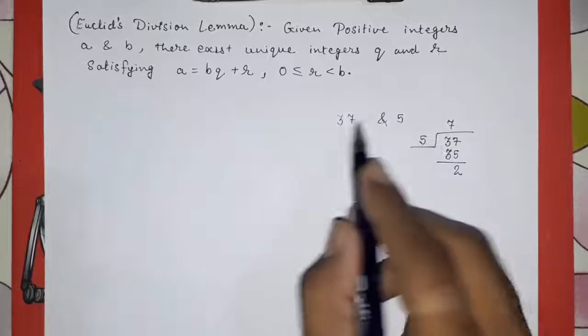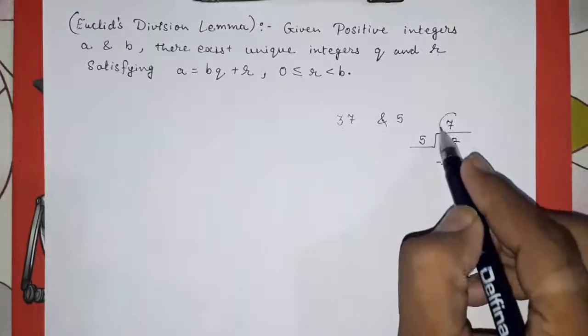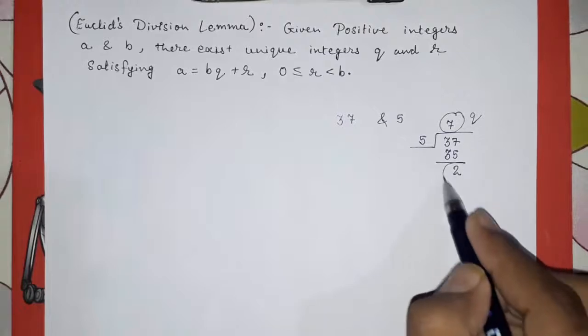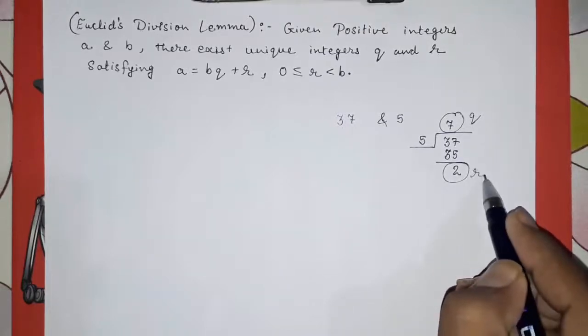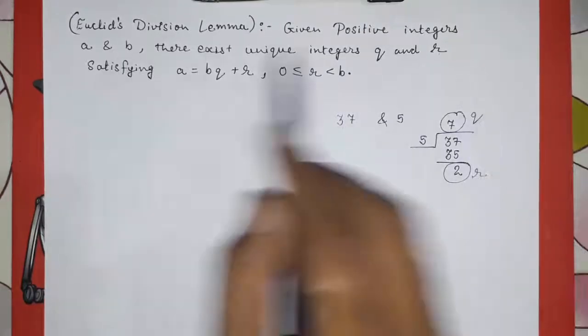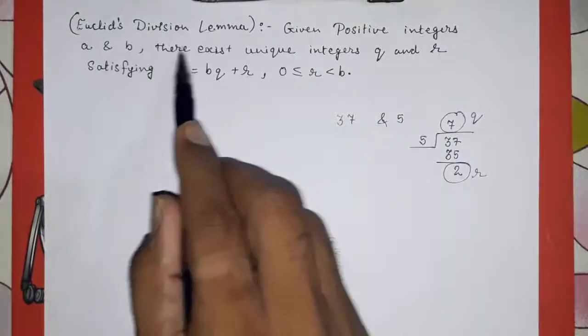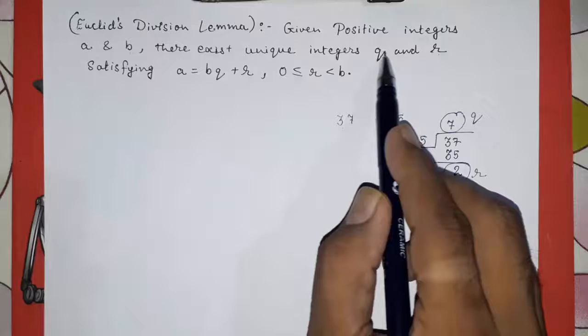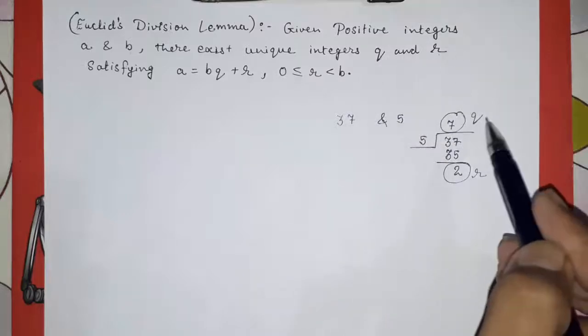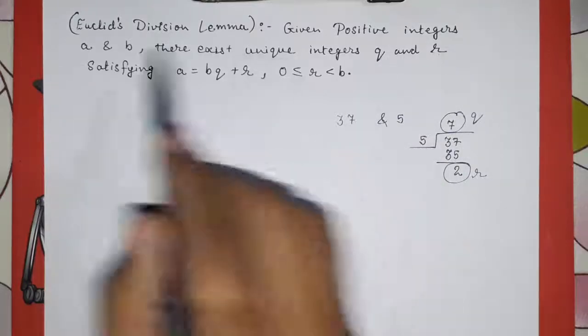Look, by dividing these two integers we are getting q, this is our q, quotient, and this is our remainder that is r. So they are telling that given positive integers a and b, there exist unique integers q and r. With the help of these two we will get two integers q and r.